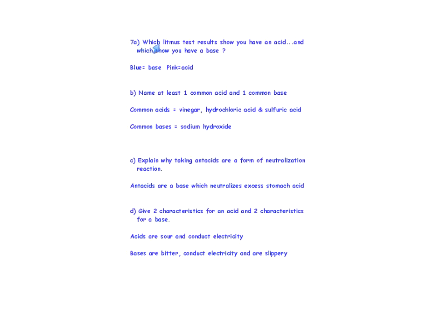Review question 7A: which litmus test results show you have an acid or a base? Blue equals base, pink equals acid. Question B: name at least one common acid and one common base. Common acids include vinegar, hydrochloric acid, and sulfuric acid. Common bases include sodium hydroxide and baking soda. Question C: taking antacids is a form of neutralization — antacids are a base which neutralizes excess stomach acid. Question D: two characteristics of acids are sour taste and conducting electricity. Bases are bitter, also conduct electricity, and are slippery.